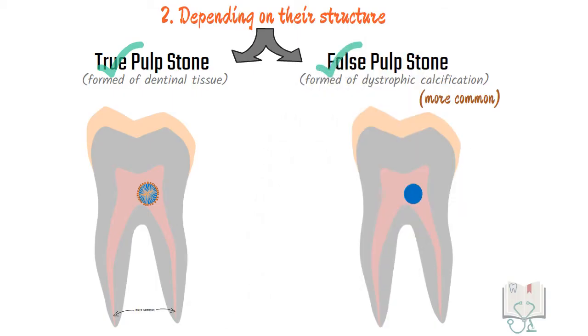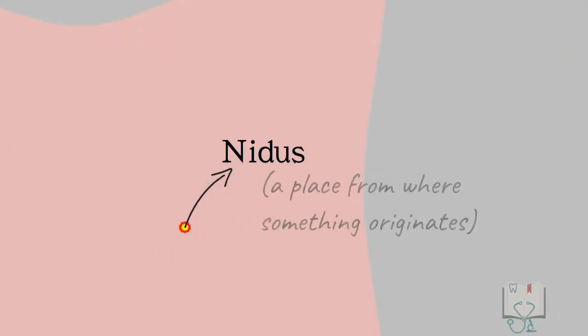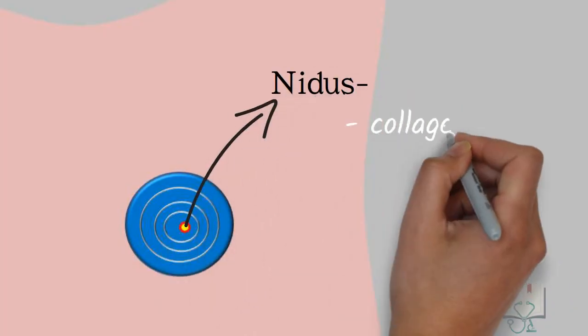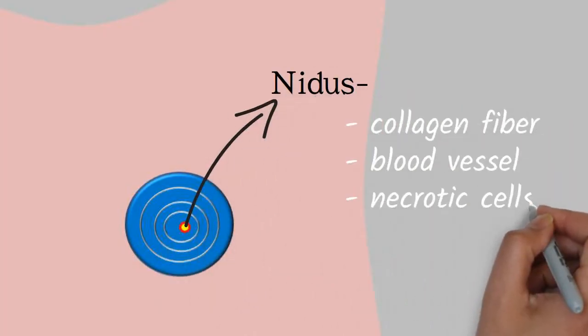Formation of false pulp stones: In this case, it is theorized that few contents of the pulp may act as a nidus for calcification, which once initiated continues with layered deposition of more minerals. The nidus may be a collagen fiber, blood vessel, or necrotic cells.